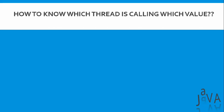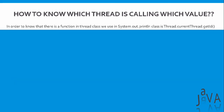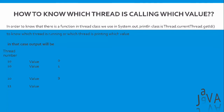Our next question is: how do we know which thread is calling which value? To find out, we use Thread.currentThread().getID() inside System.out.println to know which thread is printing which value. In that case, the output will show something like 'Thread number 10, value 0' and so on. The thread number is defined by the CPU — 10, 11, whatever values are assigned.